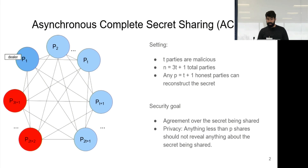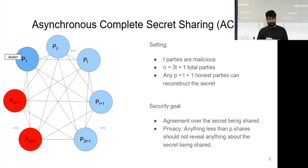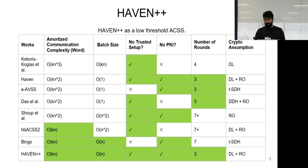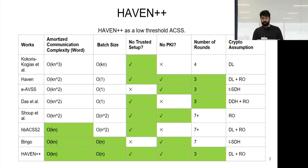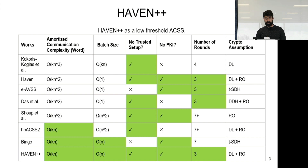For those who know AVSS: the difference here is that any T+1 honest parties can reconstruct the secret, while in AVSS at least T+1 honest parties can reconstruct the secret — the difference is in the quantifier. We present Haven++, which can be considered a low threshold ACSS. Haven++ is optimal along different dimensions: it has optimal amortized word complexity of O(KN), where K is the security parameter, and you can think of word complexity as communication complexity ignoring log factors.